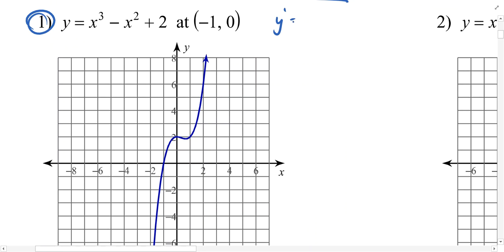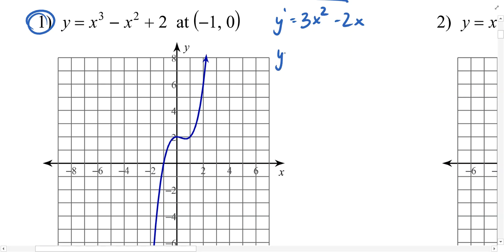We do need a derivative first, so we'll call this 3x squared minus 2x. This derivative equation will tell me the steepness of the line at any given point. The derivative we're evaluating is going to be evaluated at an x value of negative 1. So when we substitute negative 1 into this expression, we should be able to compute the slope at that point. At the coordinate negative 1, 0, we have a slope of 5.